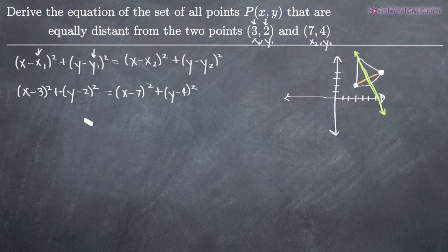So the way that we're going to do that is just by multiplying out both sides. So we'll end up with x² - 6x + 9 for this (x-3)² squared. Then we'll end up with y² - 4y + 4.